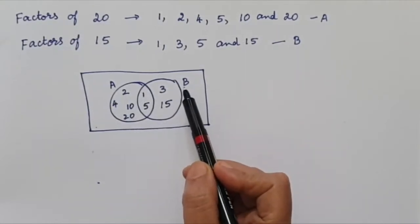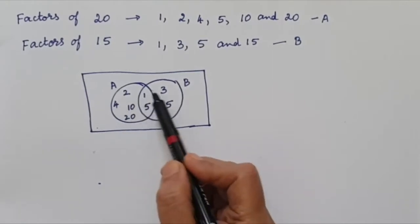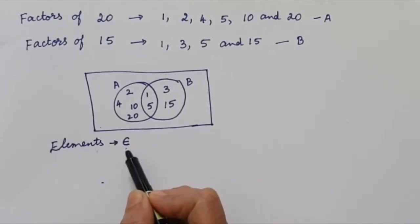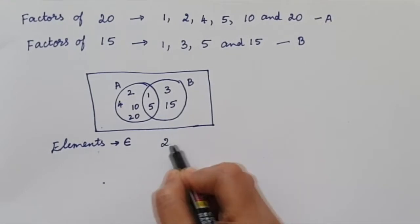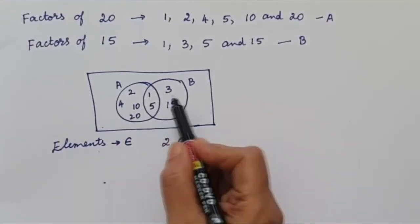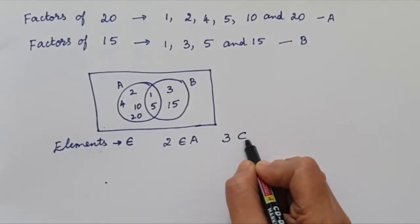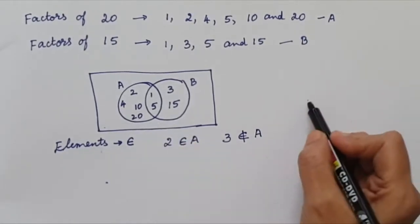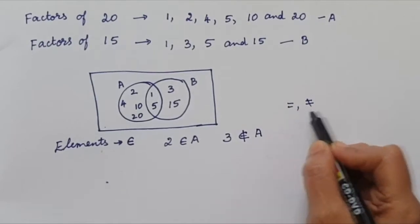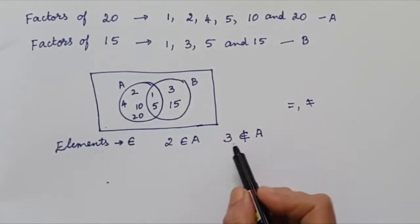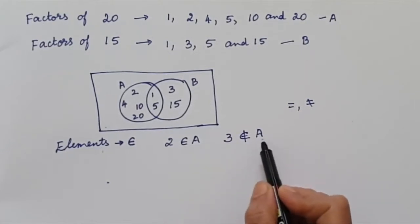As A is the factors of 20 and B is the factors of 15, A and B are called sets. The numbers which are present are called elements of the set. The symbol for elements is ∈. If you take 2, it is an element of A — that means 2 is in set A. If you take 3, then 3 is not an element of set A. Just like equal to and not equal to, we write 2 ∈ A and 3 ∉ A.